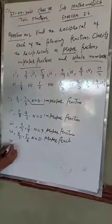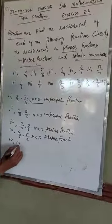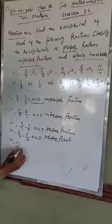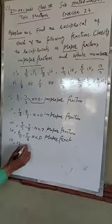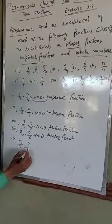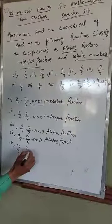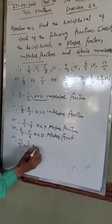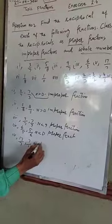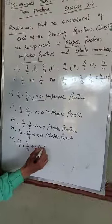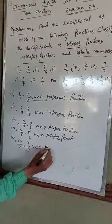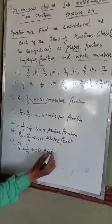Now we go to part number 5. Part number 5 is 17 divided by 7. Its reciprocal is 7 by 17. The numerator is less than the denominator, so the fraction is a proper fraction.